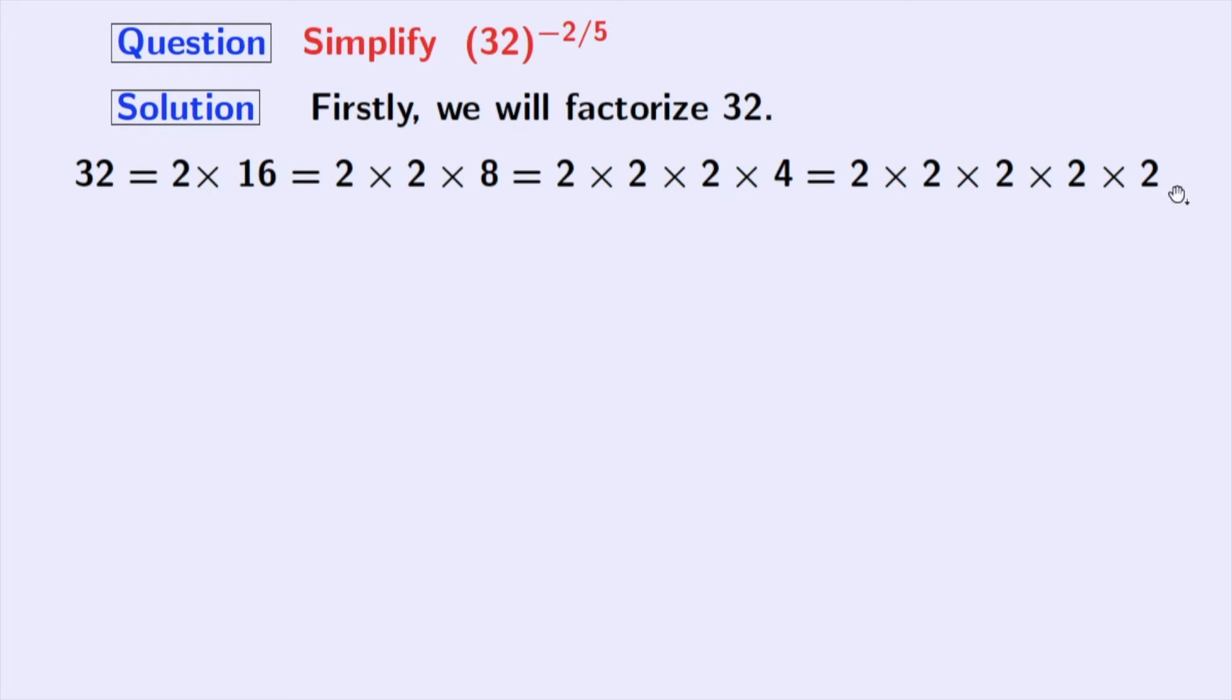Now, look that all these numbers are prime numbers, so we cannot factorize further. Look that this is the product of 5 number of 2s. So we can write 32 as 2 power 5.